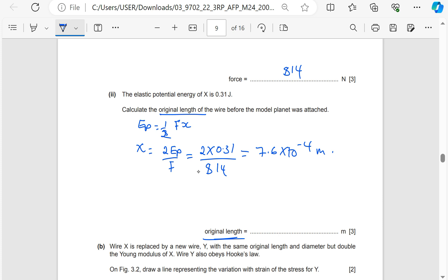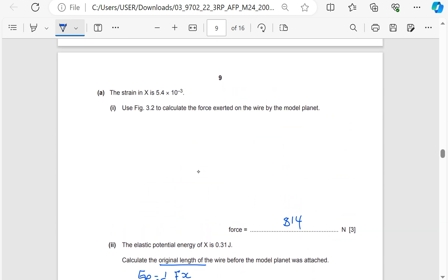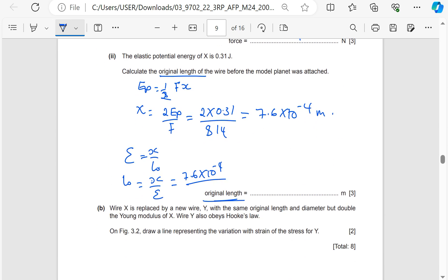So since we can use a simple expression for strain, you know that strain is equal to extension over original length. So that means the original length is equal to X divided by the strain. So the X is 7.6 times 10 to the power of minus 4 divided by the strain. The strain in this case was given as 5.4, so I'm supposed to divide this by 5.4 times 10 to the power of minus 3.